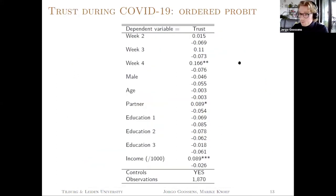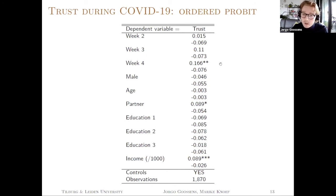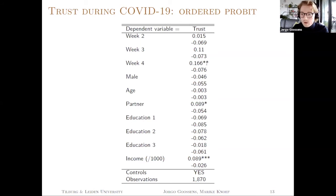We also measure trust in insurance companies, and we make the same observation in line with the Institute for Social Research in the Netherlands. Towards the end of March the coefficients increase — they are first of all positive and they increase. During week four of March, there is a clear increase in trust in insurance companies.